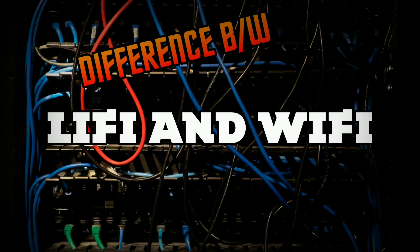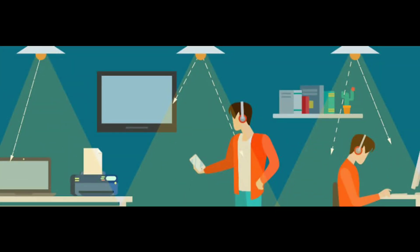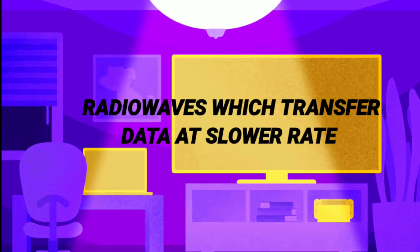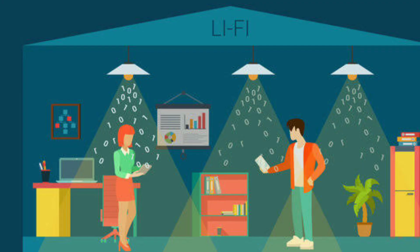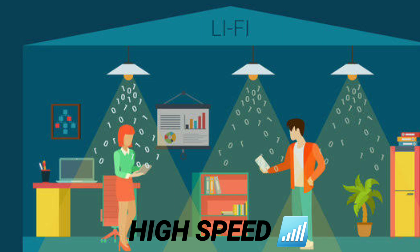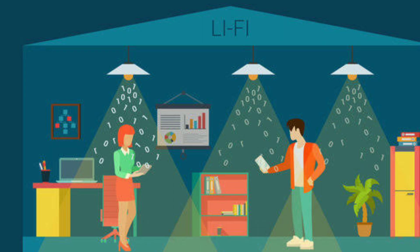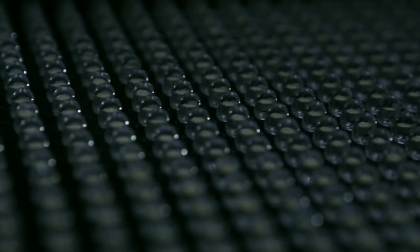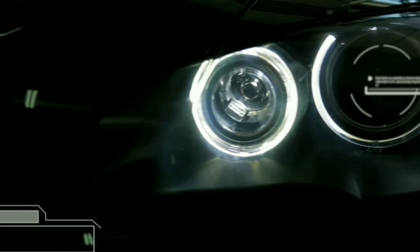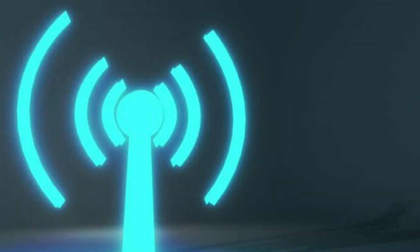You would be thinking: what is the difference between Li-Fi and Wi-Fi? The main difference is that Wi-Fi uses radio waves to transmit data at a slower data rate, whereas Li-Fi uses visible light to transmit data at a much faster rate. Li-Fi is a groundbreaking technology introduced recently in wireless communication. Through this technology, bulbs at homes, offices, and streets will not only illuminate the environment but will also transmit data wirelessly at high speed.